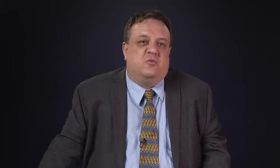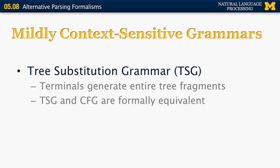Before introducing those, let me briefly mention tree-substitution grammars, which are actually equivalent to context-free grammars. Tree-substitution grammar allows you to have terminals that can generate entire tree fragments and elements. As mentioned, tree-substitution grammars are formally equivalent to context-free grammars.